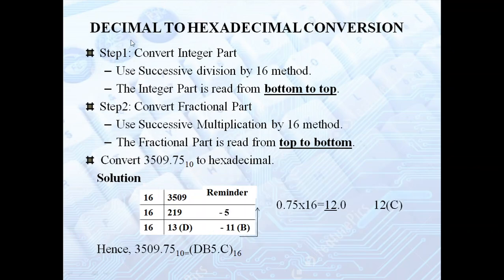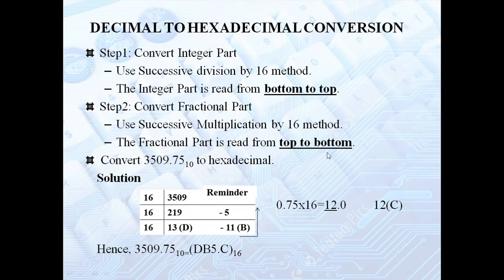Let us see how to convert decimal to hexadecimal. First, convert the integer part using successive division by 16 and read the result from bottom to top. If there is a fractional part, convert it using successive multiplication by 16 and read the result from top to bottom.